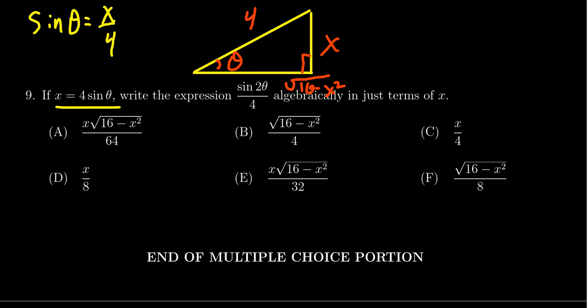So now what do we do with this sine of 2 theta over 4? Well this triangle is associated to the angle theta. We have to translate from 2 theta to theta and so we're going to do that in this case using the double angle identity for sine. So the double angle identity for sine is 2 sine theta cosine theta.